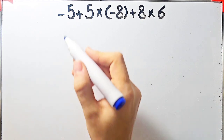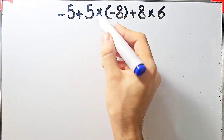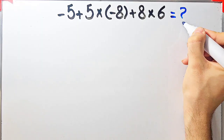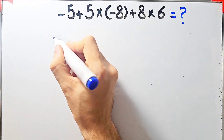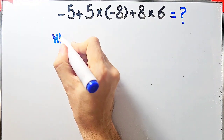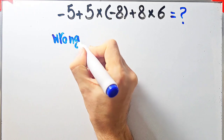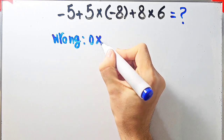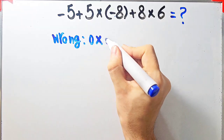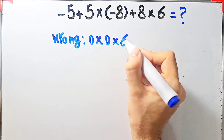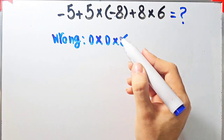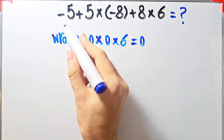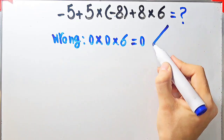Let's solve another question about the PEMDAS rule. In this question we have: negative 5 plus 5 times negative 8 plus 8 times 6. Some people solve this by going left to right: negative 5 plus 5 equals 0, 0 times negative 8 plus 8 equals 0, 0 times 6 equals 0. They say the final answer equals 0, but this is wrong.